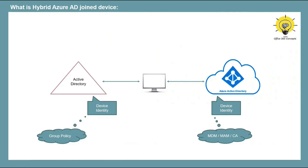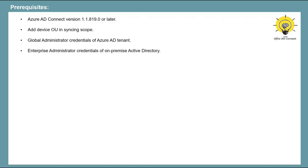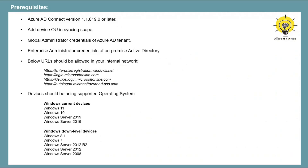Now let's understand the prerequisites for configuring a device as hybrid Azure AD join. You need to make sure you're using the latest version of Azure AD Connect. While configuring Azure AD Connect, you need to add the OUs within the syncing scope where the devices are stored. You need credentials of the global administrator account of your Azure AD tenant and the enterprise admin credentials of on-premise AD. Before you configure Azure AD Connect, make sure that the required URLs are allowed in your network, and you need to make sure your devices are using a supported operating system.